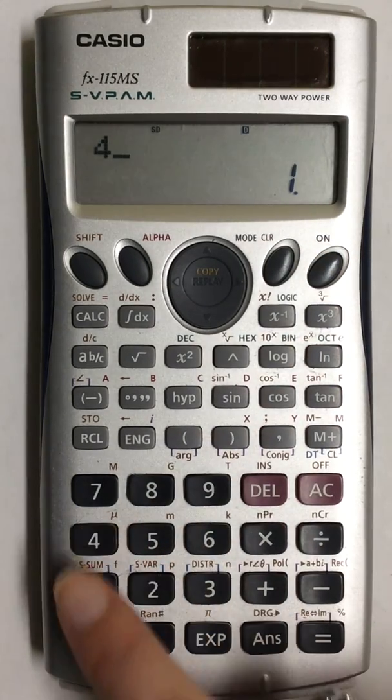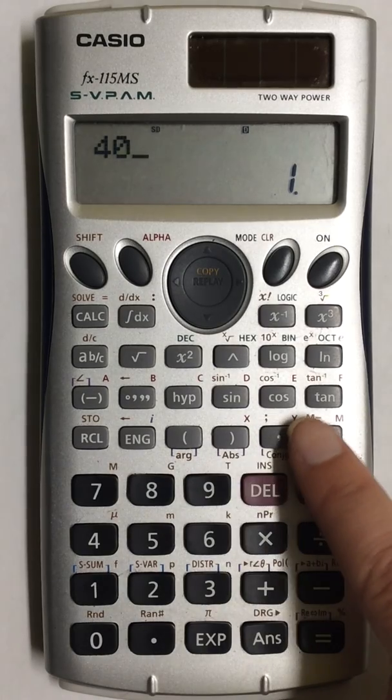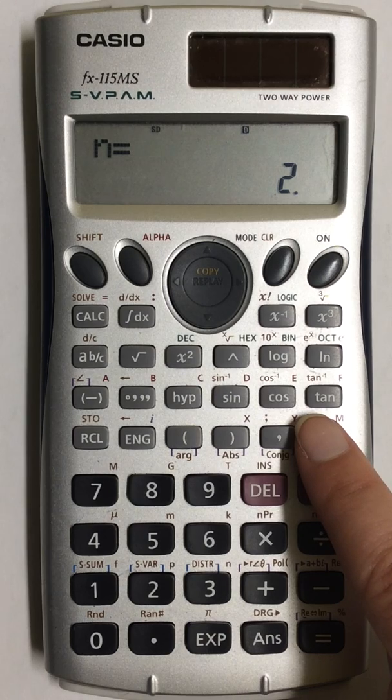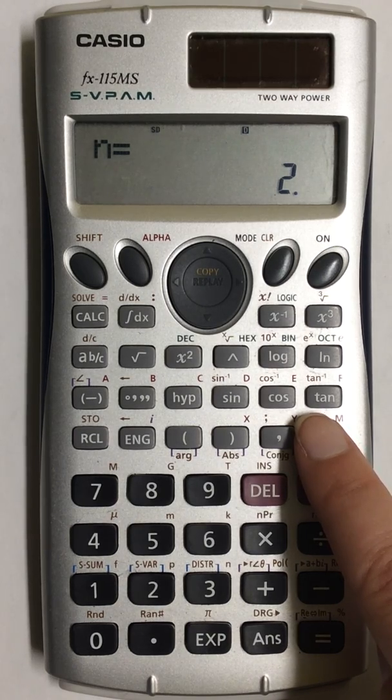I put in my next value and press M plus. N equals 2. That means I have two values entered into my calculator.